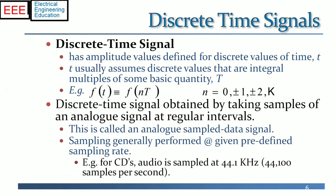A discrete time signal only has amplitude values defined for discrete values of time t. Thus t usually assumes discrete values that are integral multiples of some basic quantity T. For example, f of t is equal to f of n T where n equals zero, plus minus one, plus minus two, etc. A discrete time signal can be obtained by taking samples of an analog signal at regular intervals. This would be called an analog sample data signal. Sampling is generally performed given a predefined sampling rate according to the Nyquist criteria.